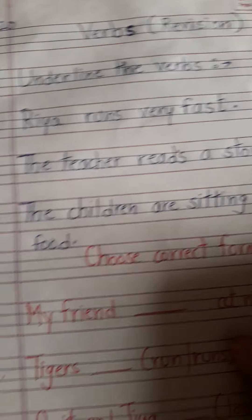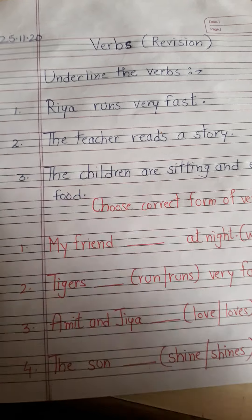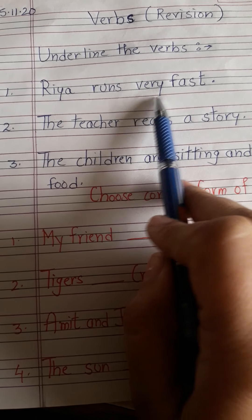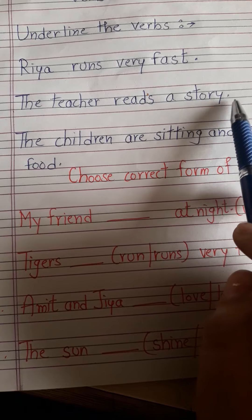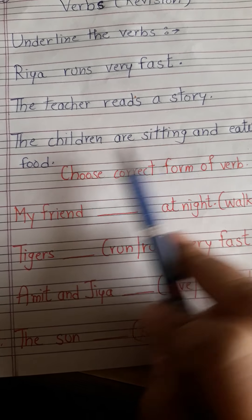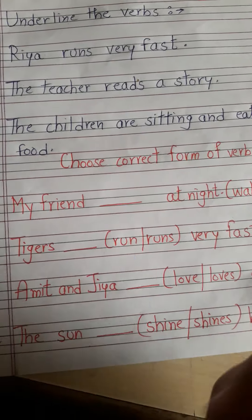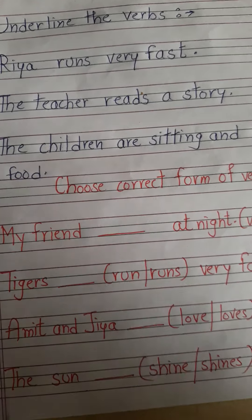On the basis of this, I am going to give you one exercise which you have to do in your notebook completely on your own. I will read it once for you, but you have to solve this exercise on your own. Number one is: underline the verbs. The sentences are: 'Rhea runs very fast.' 'The teacher reads a story.' 'The children are sitting and eating food.' Now be careful — there can be more than one verb or action word in one sentence, so you have to choose all of them.